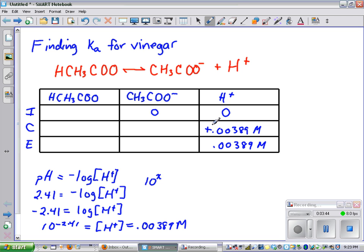And since this equation balances with 1, 1, and 1 for the coefficients, if 1 mole of H+ is formed, 1 mole of acetate is formed. So I also must have had to add 0.00389 moles per liter, which equals 0.00389 on our solution.